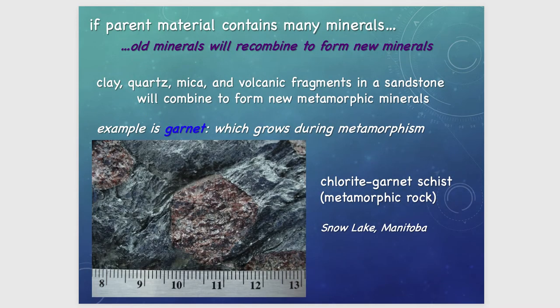If the parent material contains many minerals, old minerals will usually recombine to form new minerals. This is the example of garnet, which can form from relatively mafic assemblages or also from metapelites — if we have clays and silica from different types of parent rocks, through alteration we can recombine those minerals at increased pressure and temperature to form, for example, garnet.